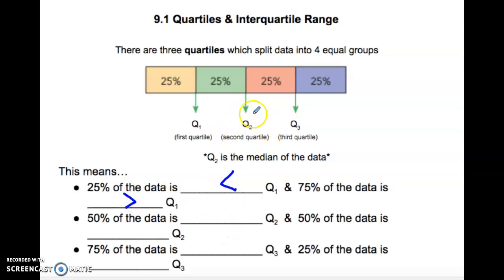Now let's look at Q2. 50% of the data is less than Q2. Also 50% of the data is greater than Q2. And Q3, or the third quartile, 75% of the data here is less than Q3, and also 25% of the data is greater than Q3.